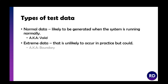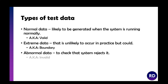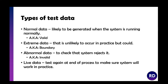We need to look at the different types of test data. The first type is normal data — this is what you expect, data that should normally get typed in on a regular basis, which should work. Extreme data is data that is unlikely to occur in practice but could. So it might be that if you're entering lots of dates, someone might enter a date far in the future, like 999,999.